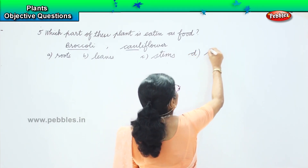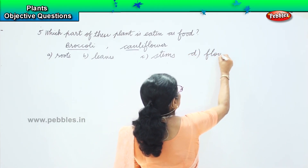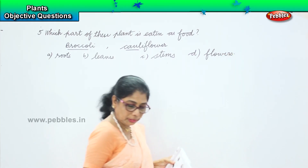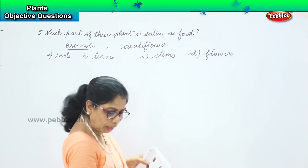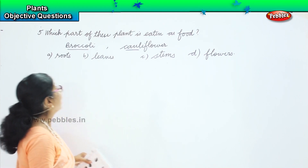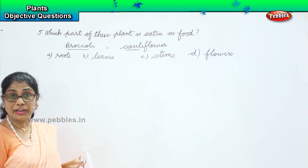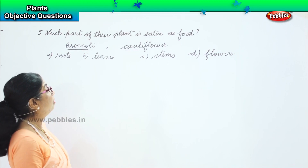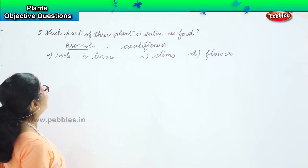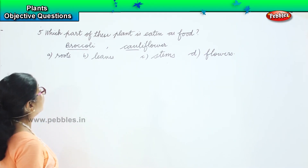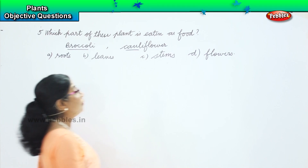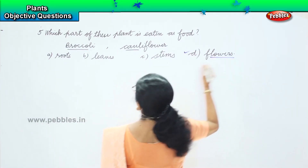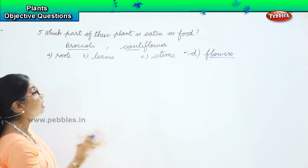Broccoli and cauliflower — are they roots? Definitely not. Are they leaves? No. Are they stems? No. So broccoli and cauliflower, they are flowers. Which part of the plant? They are flowers that are eaten as food.